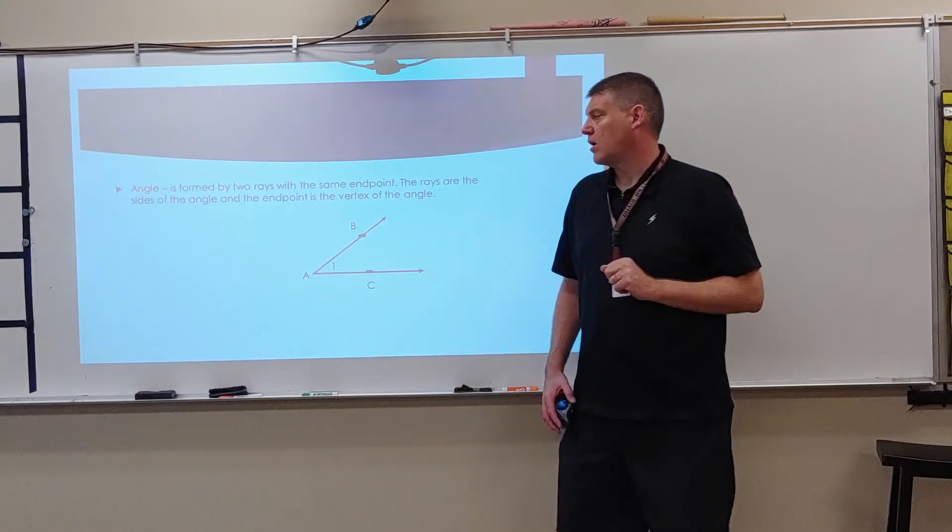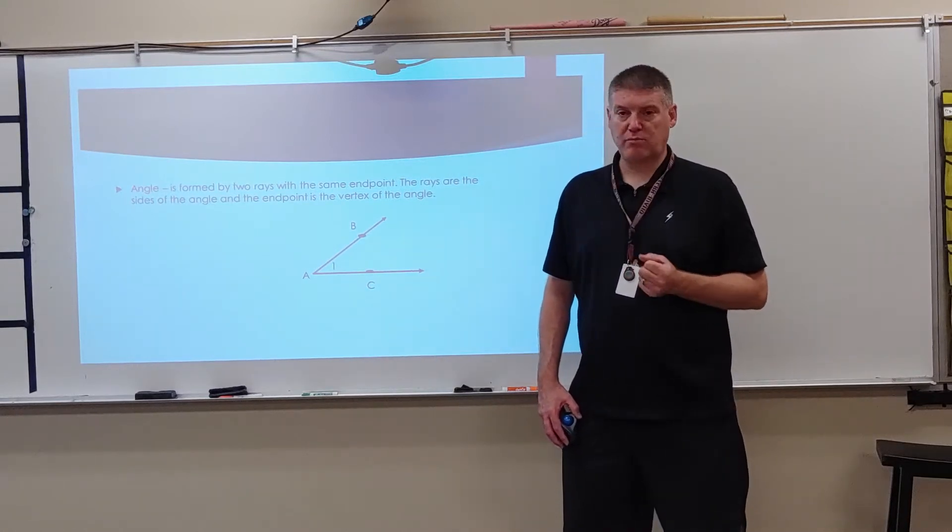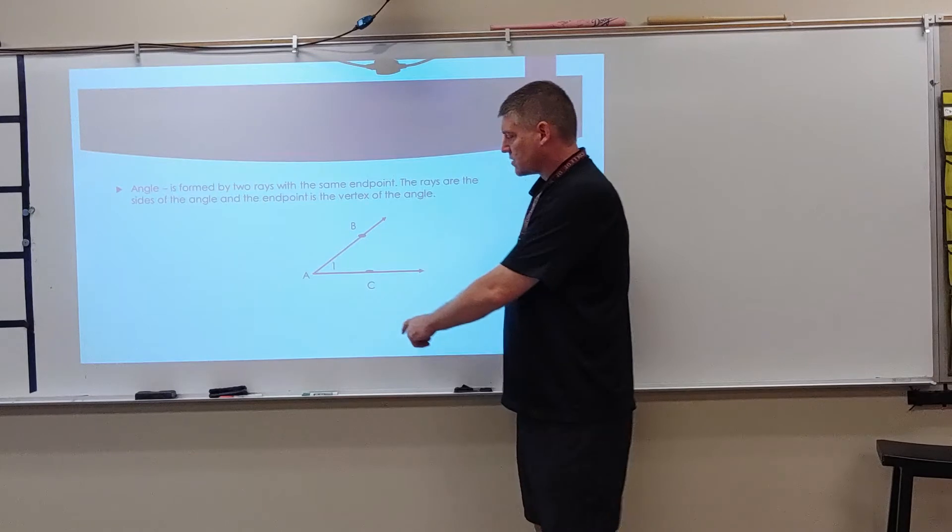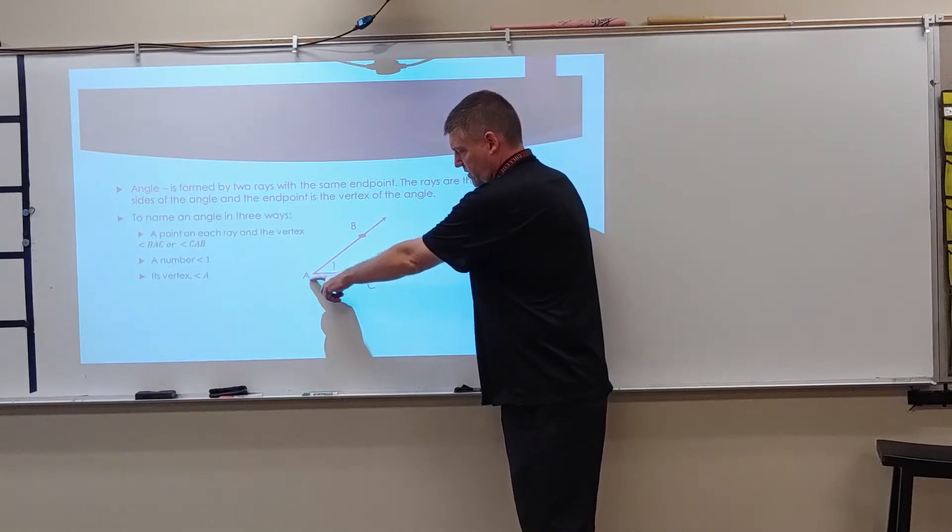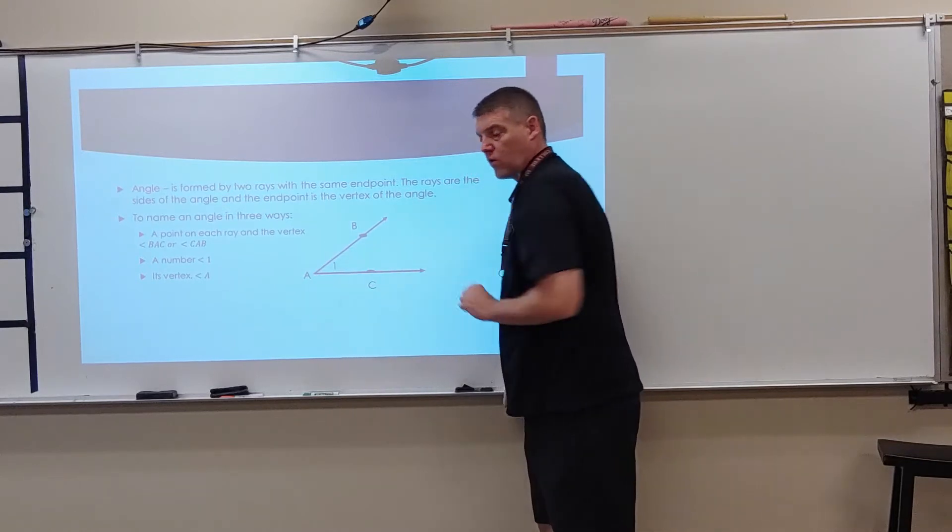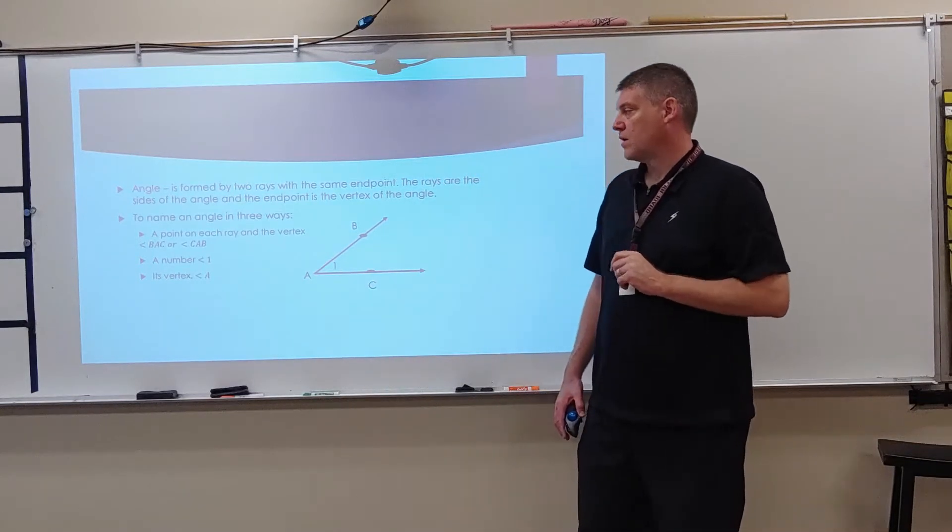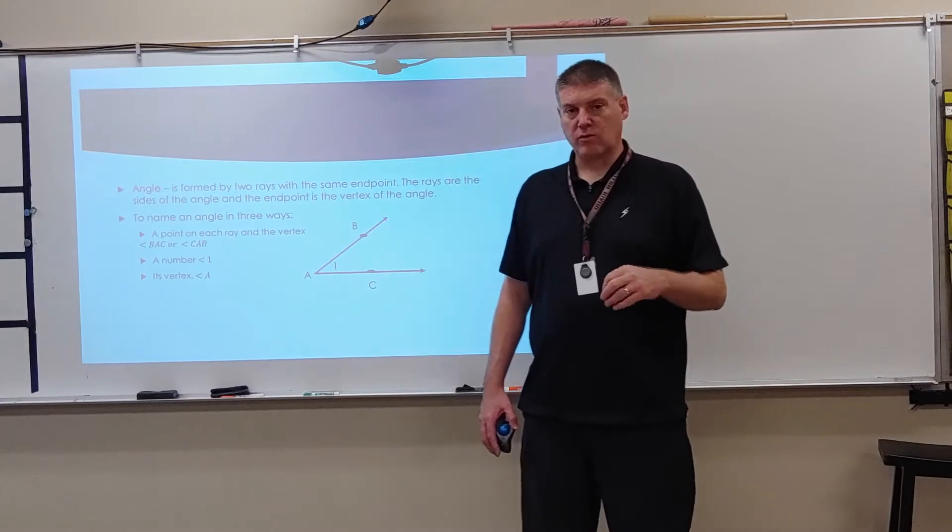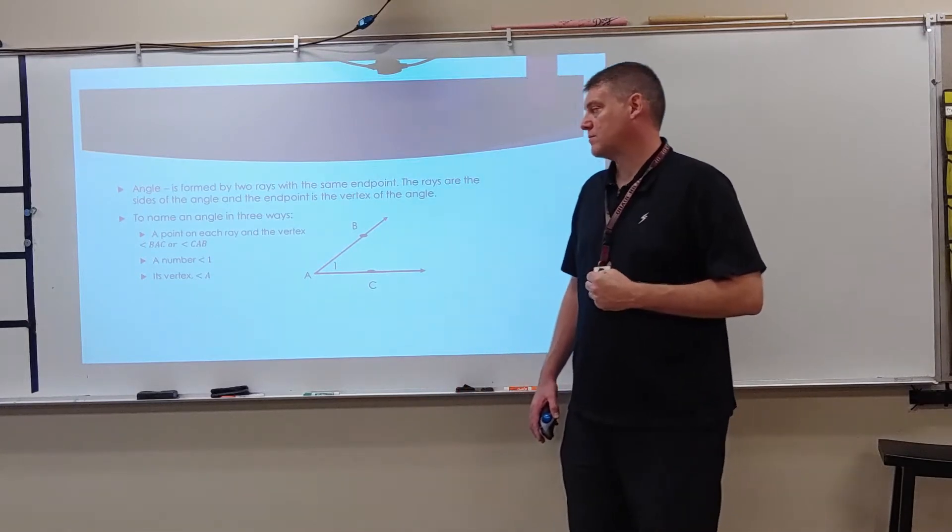The rays are the sides of the angle and the endpoint is the vertex. So here I have angle, ray AC and ray AB, and they're going to form this angle. To name an angle, we can do it in three ways.